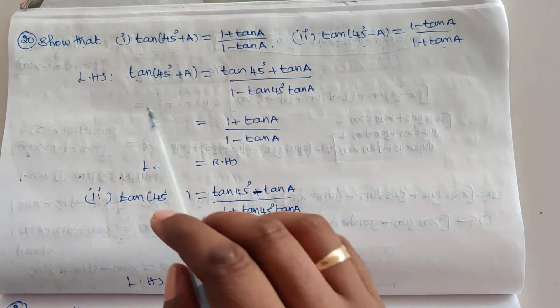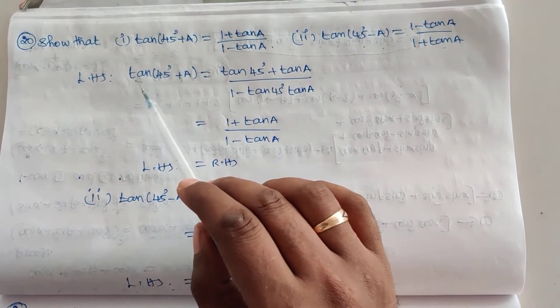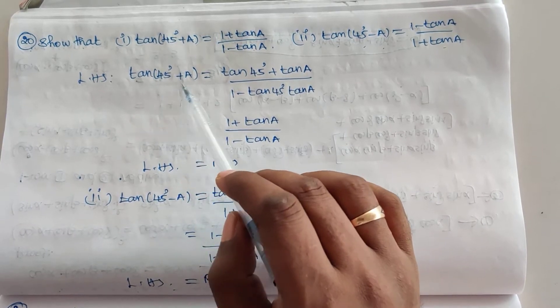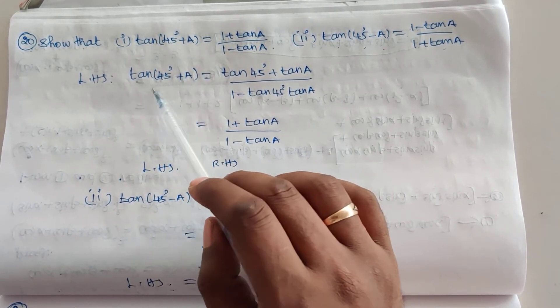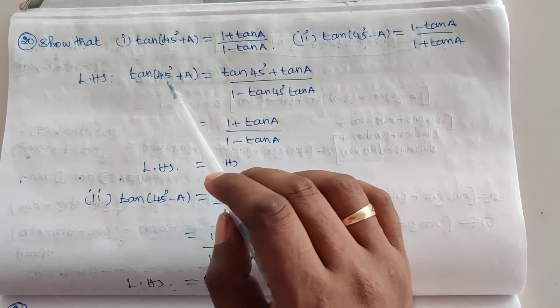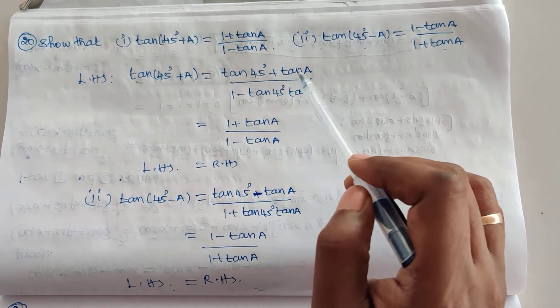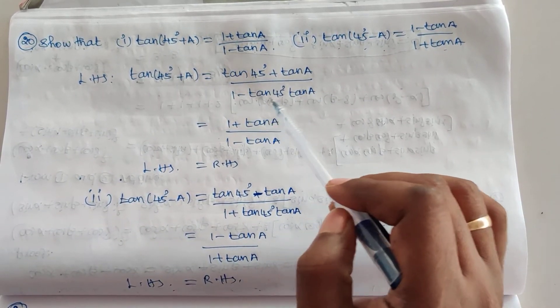First, I am going to take the first sub-question LHS: tan(45° + a). This is in the form of tan(A + B), so the formula is: tan A + tan B, the whole divided by 1 minus tan A tan B.